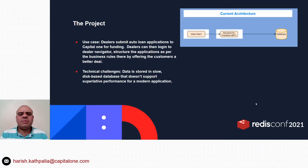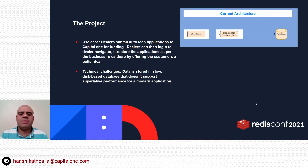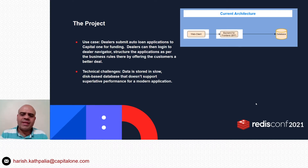Capital One specializes in auto loans, and dealers submit auto loan applications to Capital One. These applications can be approved or declined depending upon business rules and policies. I'm working on an application called Dealer Navigator, where dealers can log in, view, and structure the application. On the right-hand side is the architecture of a capability that the application supports, where dealers can view all submitted applications in a list form.